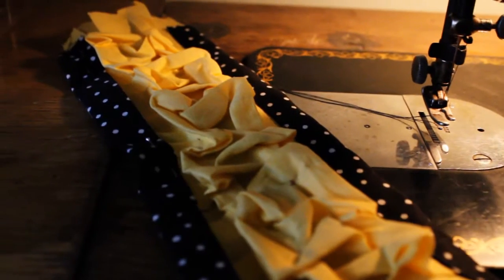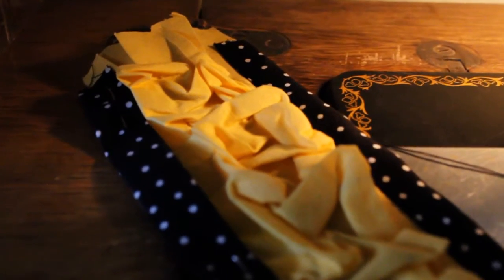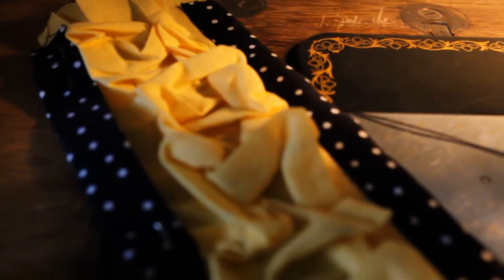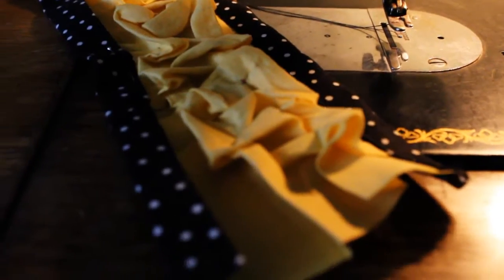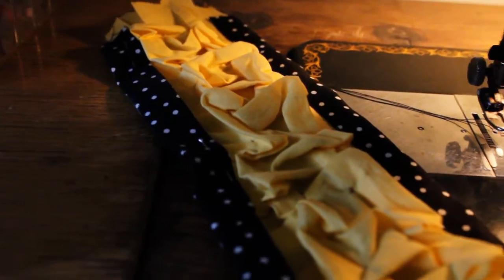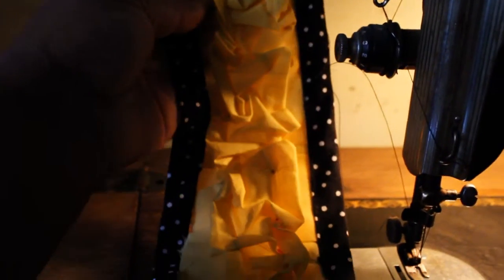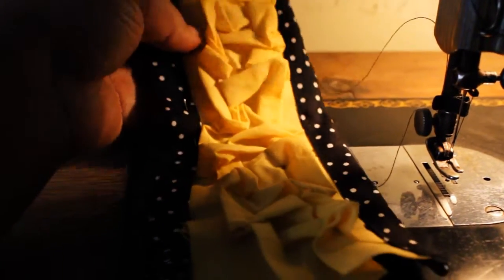So I completed this part of the smocking and what I decided to do was to add this bias trim on it. I ironed down all of the sides and I'm just sandwiching it between the bias trim, and it makes for a really cute little detail that will go down the front of the dress.